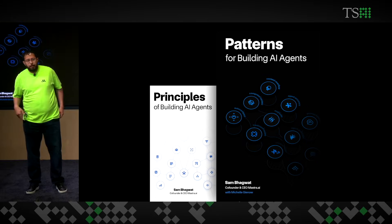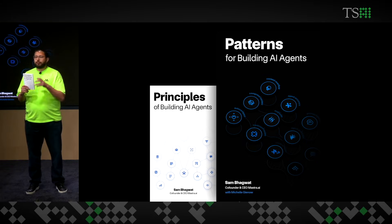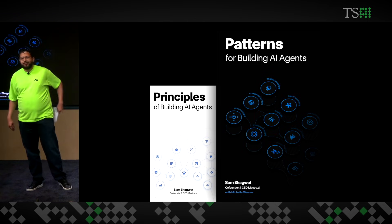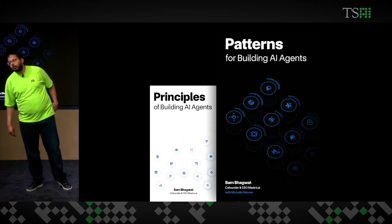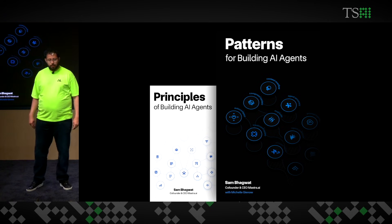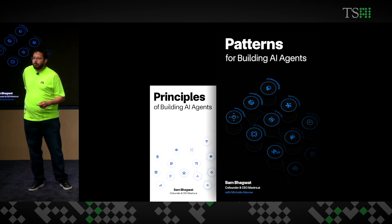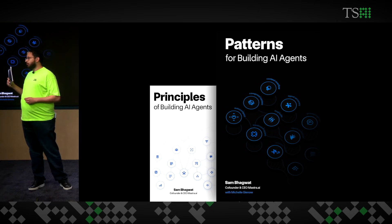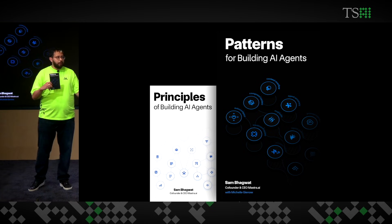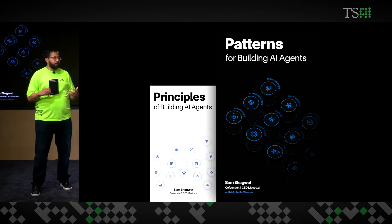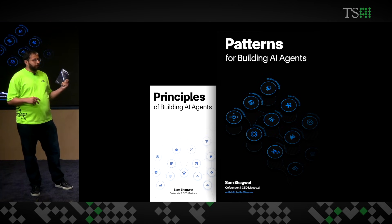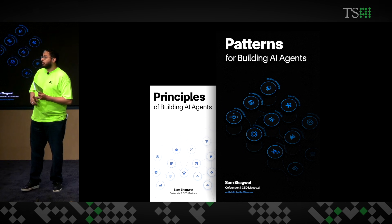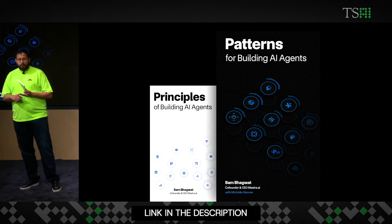Many of you have read my popular book, Principles of Building AI Agents. Well, we wrote a sequel. The gap between prototype and production is where most teams stumble, so we wrote Patterns for Building AI Agents. It captures practical strategies that have emerged in this year of agents — agentic design patterns, context engineering, eval workflows, and security fundamentals like preventing prompt injection and sandboxing code execution.